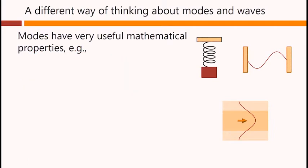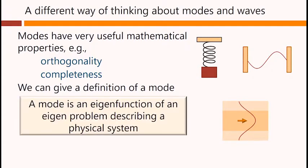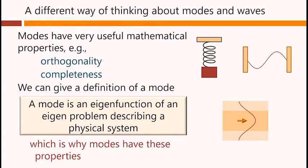Modes have very useful mathematical properties, for example, orthogonality and completeness. And we can give a definition of a mode: A mode is an eigenfunction of an eigenproblem describing a physical system. But because it's an eigenfunction, that's why modes have these properties.